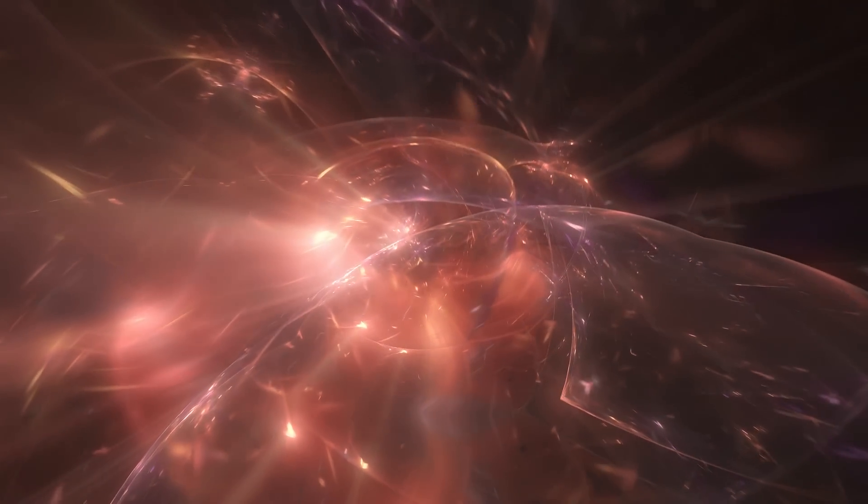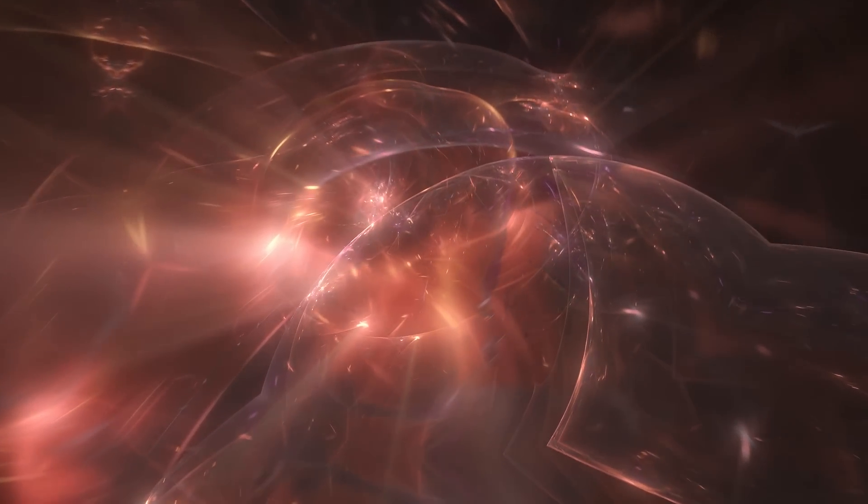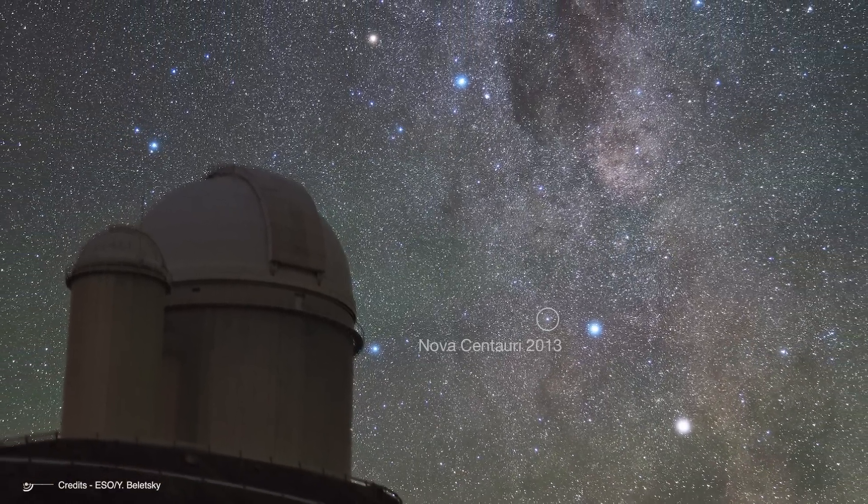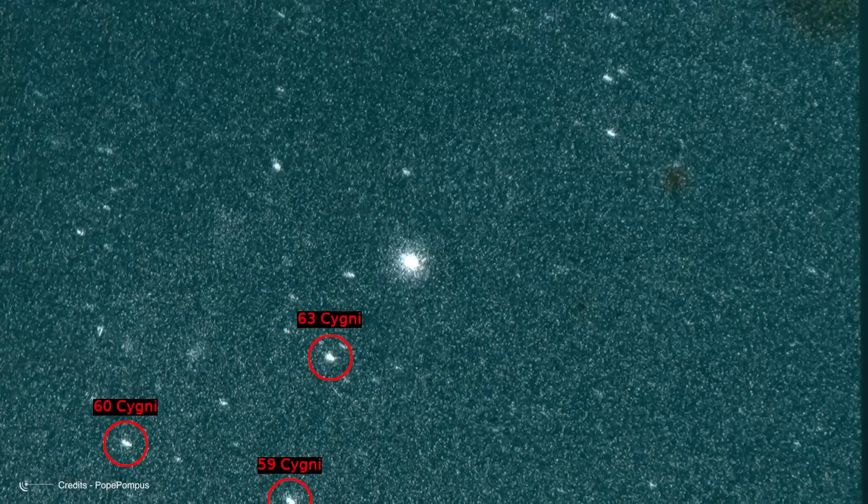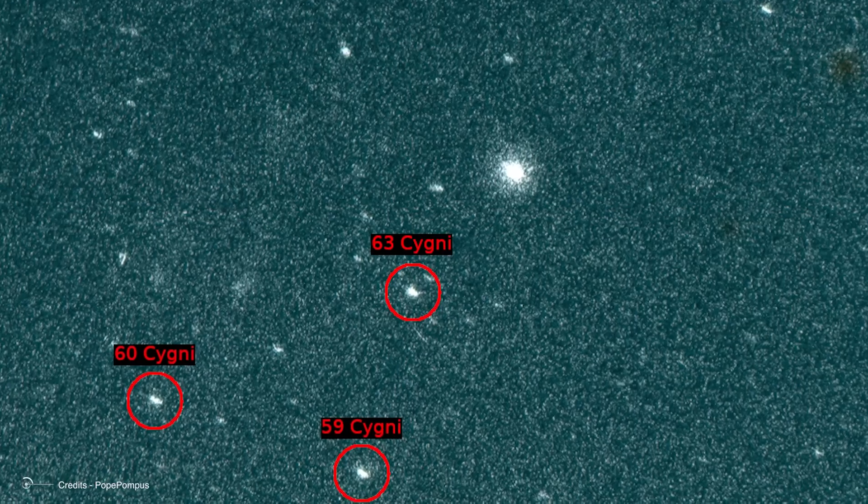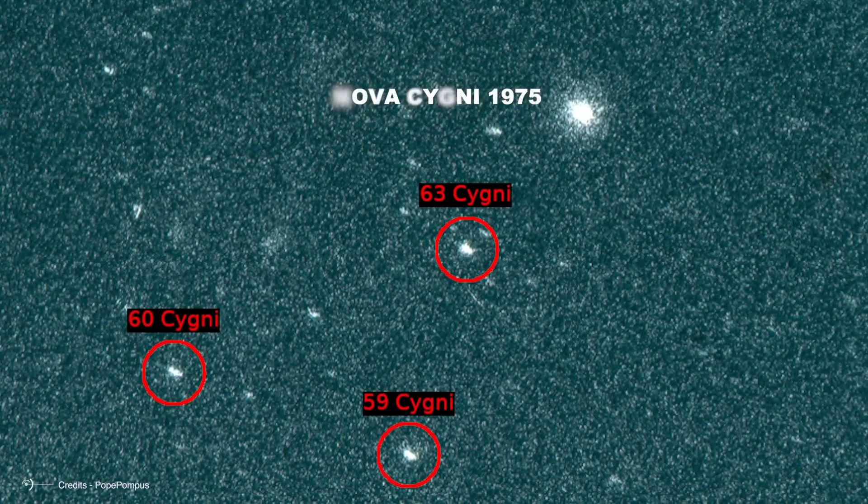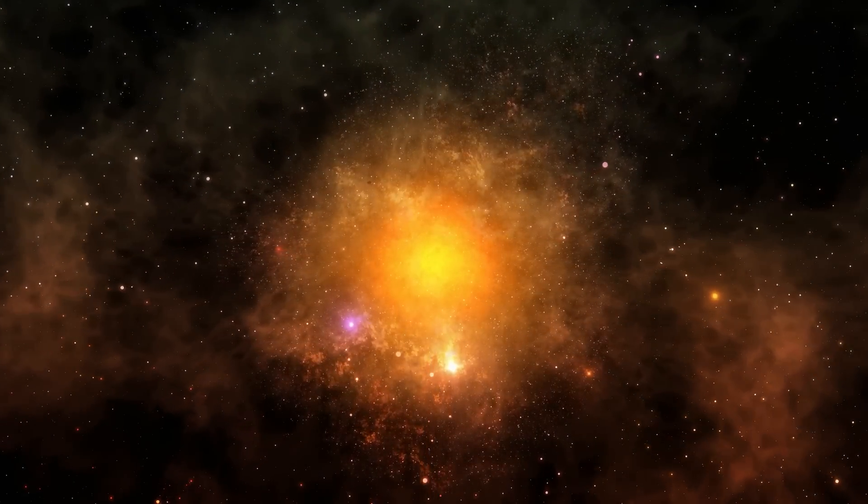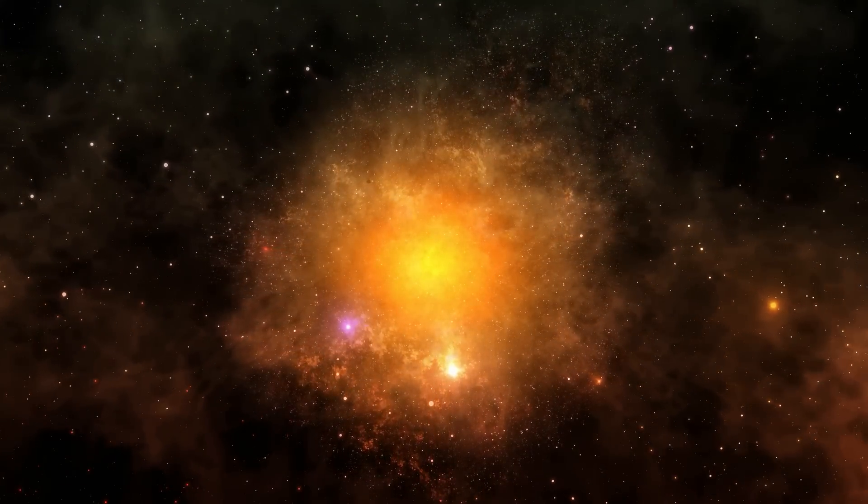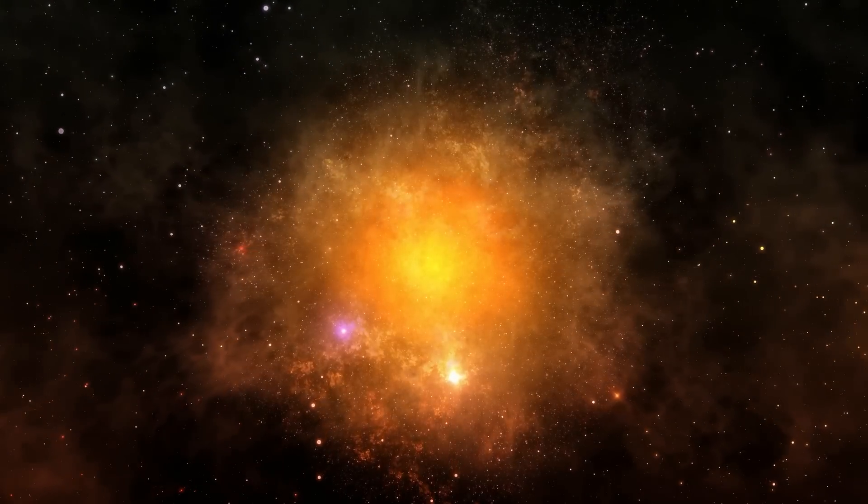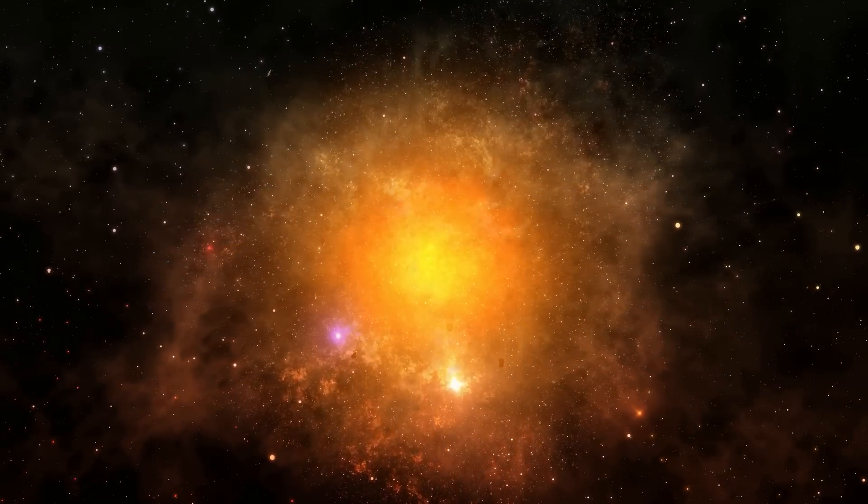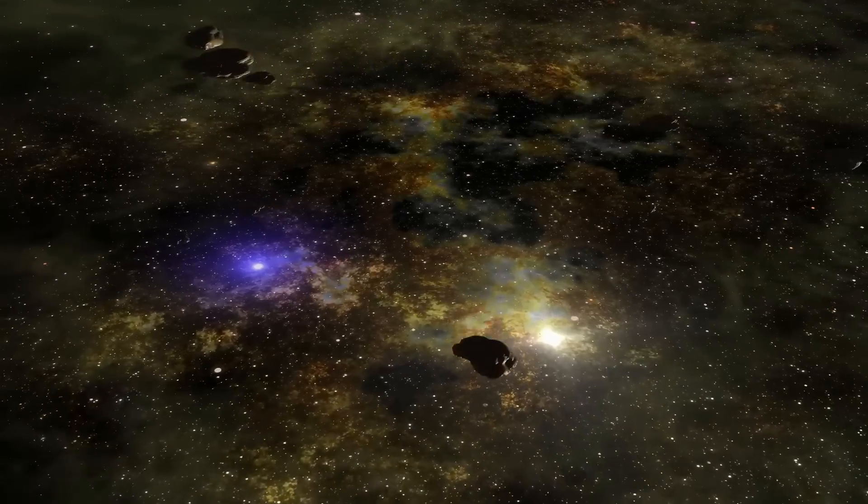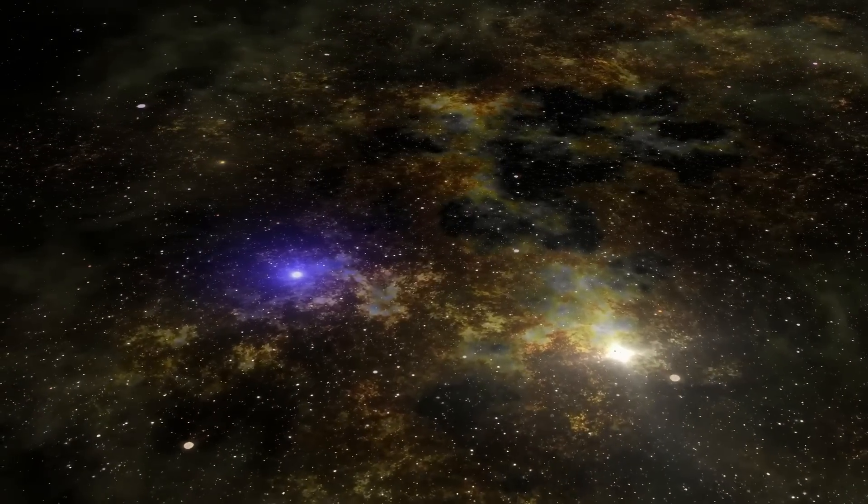Novae that reach first or second magnitude can be counted on one hand. The last bright nova was V-1369 Centauri, which reached magnitude 3.3 in December of 2013. Personally, I still remember witnessing the exceptional and unexpected explosion of Nova Cygni 1975 as a young man, which, at the end of August 1975, shone at magnitude 1.7, becoming the second brightest star in the constellation Cygnus after Deneb. In the following days, it quickly dimmed, dropping 7 magnitudes in the 45 days following its peak.